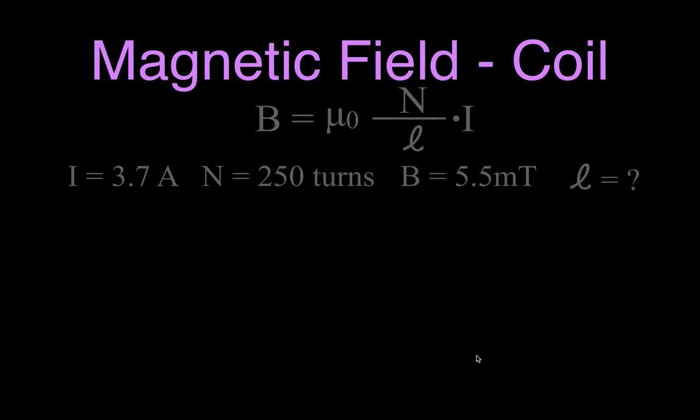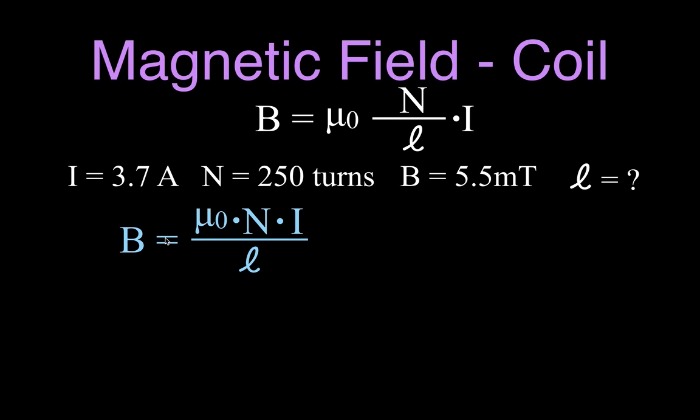Now in this problem, we want to know the length of the coil. We're given the current, the number of turns, and the magnetic field strength. We're going to use the same equation. We're going to rearrange the equation to solve for the length. And the first thing I'd like to do, maybe just to show how it works out, is that we're going to place the μ₀ and the I, the current, on the top half of that equation, on the numerator, and we have in our denominator the length.